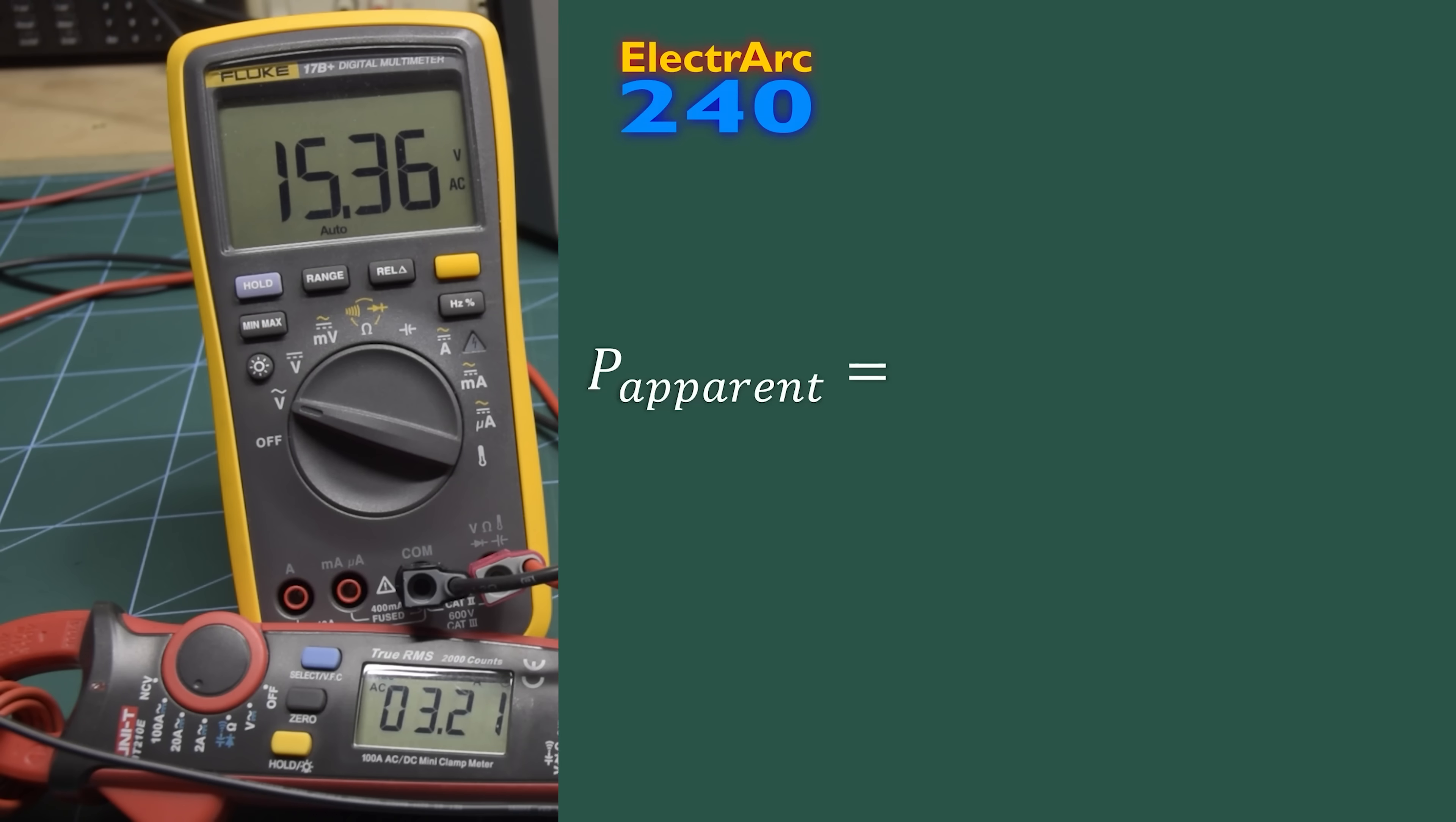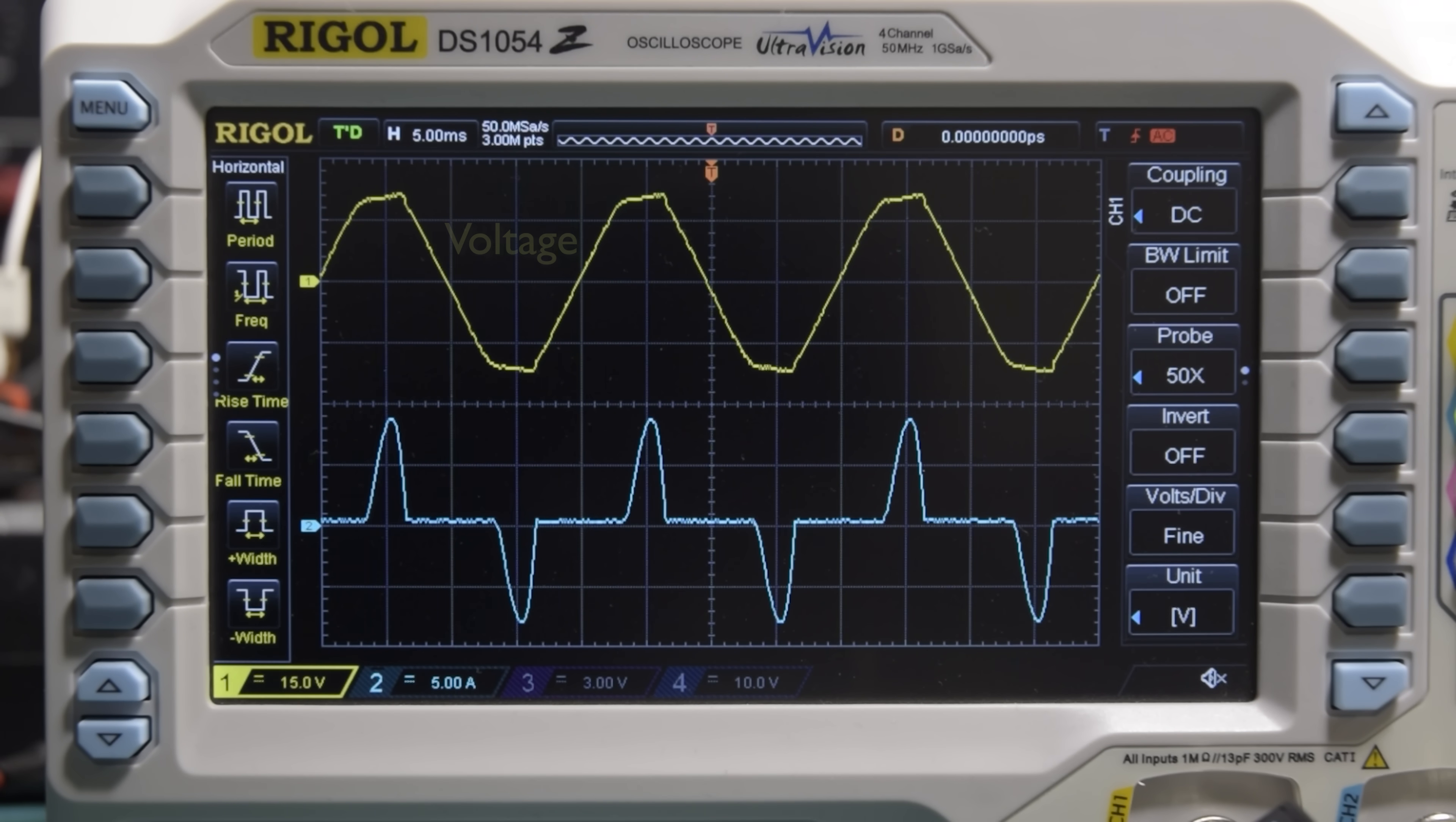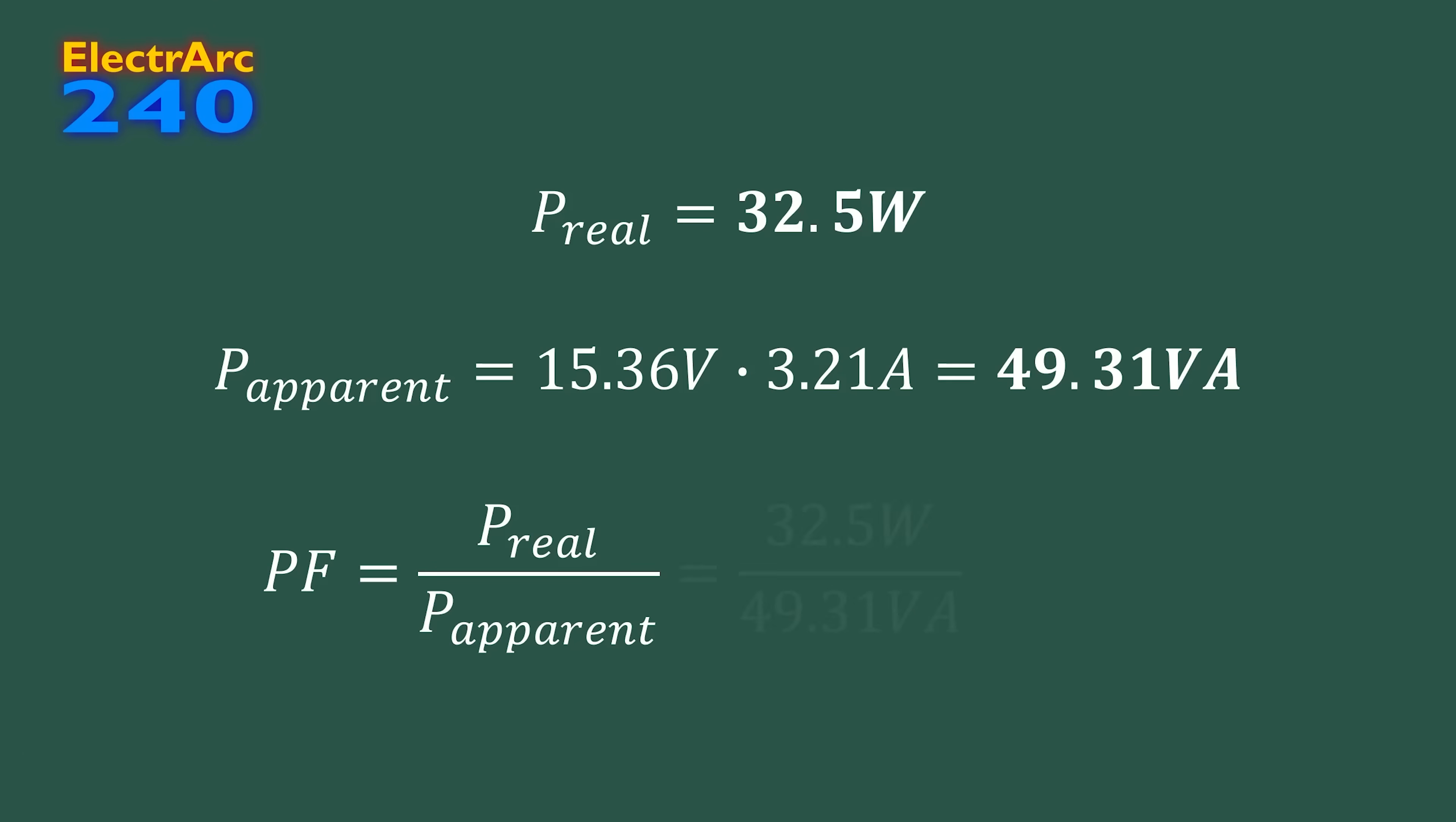Apparent power is what we get when we measure the RMS voltage, measure the RMS current, and then multiply the two together, in this case a little over 49 volt amps. Real power is what we get when we multiply the voltage and current waveforms to get a power waveform, and then calculate the average of that. We can do this using the math function of the oscilloscope, the purple waveform is the power, and we can see at the bottom of the screen it's telling us our average, the real power draw, which is about 32 watts. So dividing that by the apparent power shows this circuit has a power factor of about 0.66, where an ideal power factor would be 1.